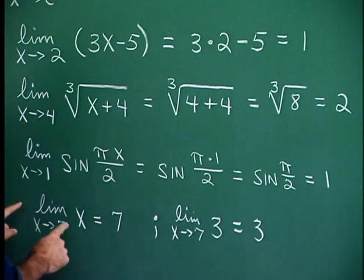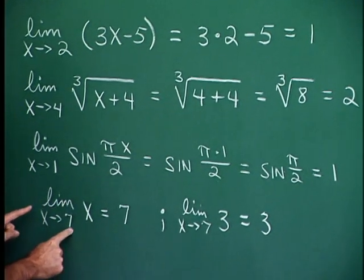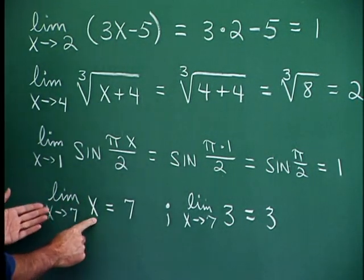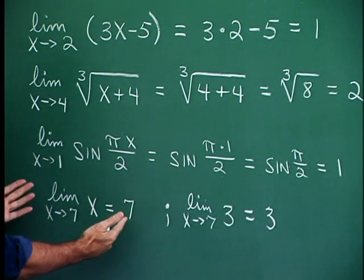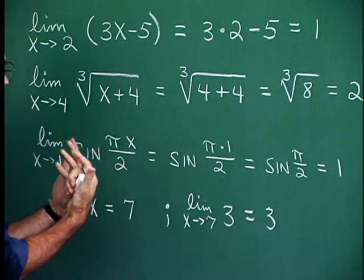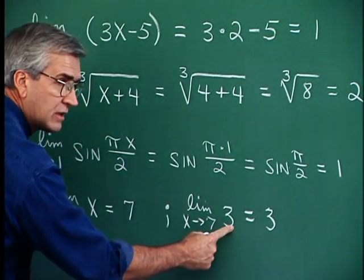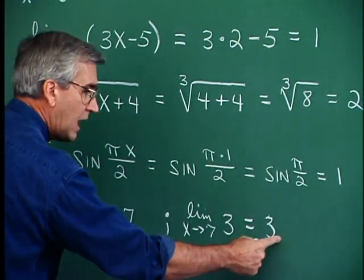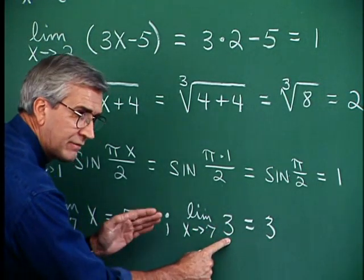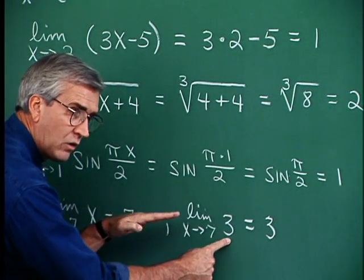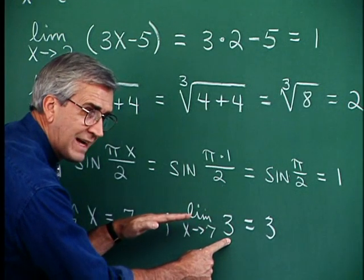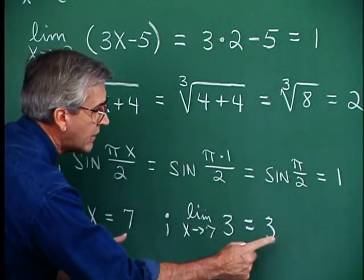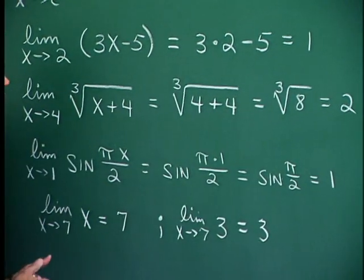These are even more trivial. The limit as x approaches 7 of x: f of x is x, so replace x with 7 and we have 7. Even more fundamental is the limit of a constant. The limit as x approaches 7 of a constant would be the constant — the graph is a horizontal line through y equals 3, so as x approaches any value, f of x is going to be 3. So these are rather trivial situations.